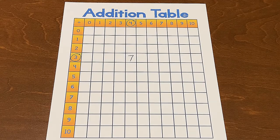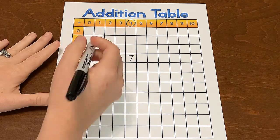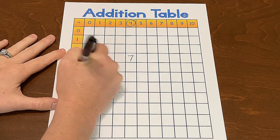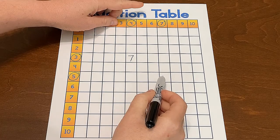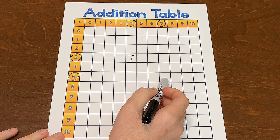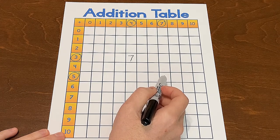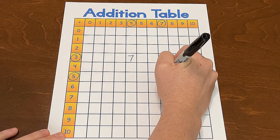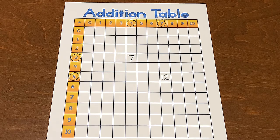Let's try it with a totally different one. This time let's try 5 plus 7. So 5 is my row and 7 is my column. I'm going to find where my row and my column meet. Here's the spot. And I think in my head — what is 5 plus 7? The answer to 5 plus 7 is 12, and I would find the number 12 here. I could fill out this whole entire addition table if I needed to, using my rows and columns to find my answer.